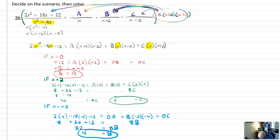And so to put all those answers back in, we said a was three. So we have three over x. We said b was four. So we have four over x plus two. And we said c was five. So we have five over x minus two.